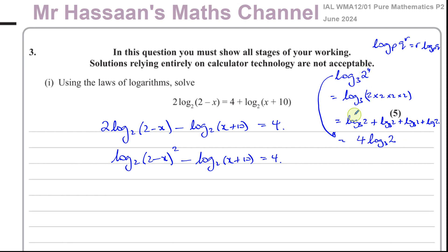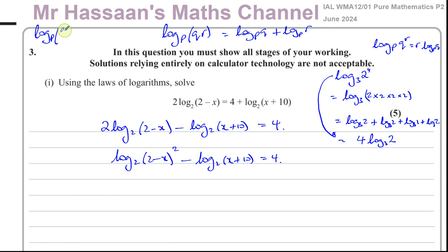So we've got two laws of logarithms included in this proof. An important one is: log base p of (q times r) equals log base p of q plus log base p of r. And if we have log base p of (q divided by r), then this is log base p of q minus log base p of r. That's the subtraction law, or division law, and the multiplication or addition law.